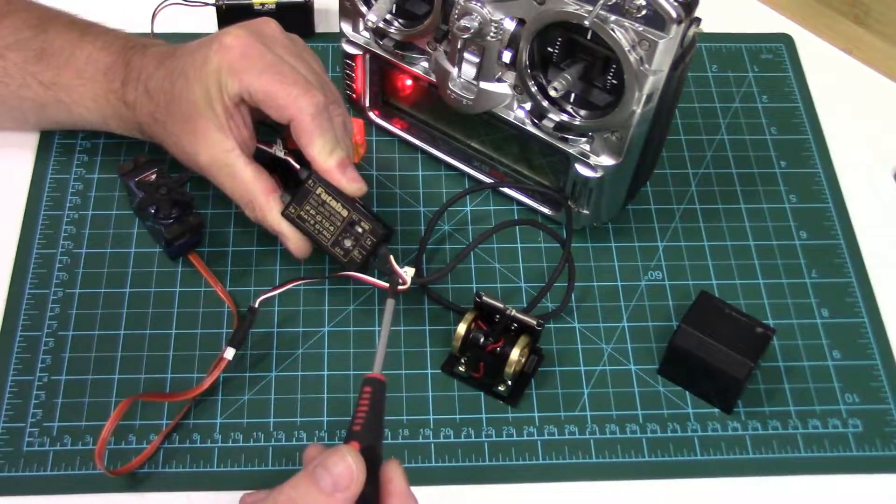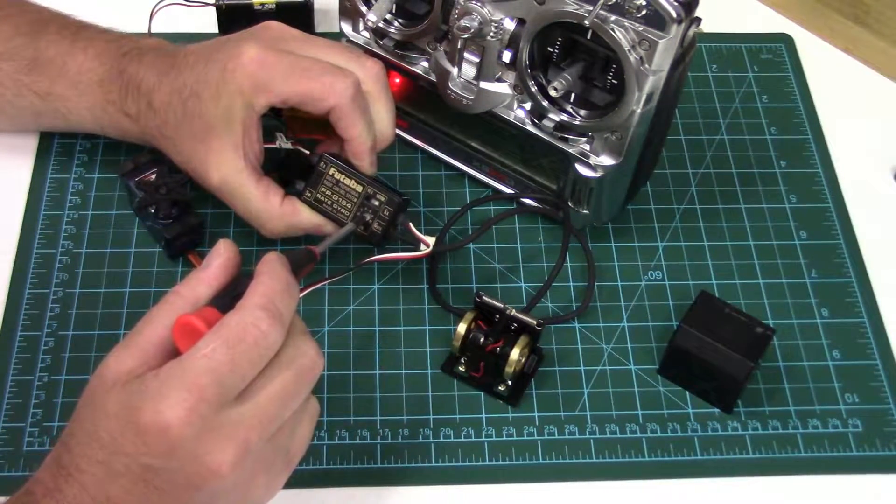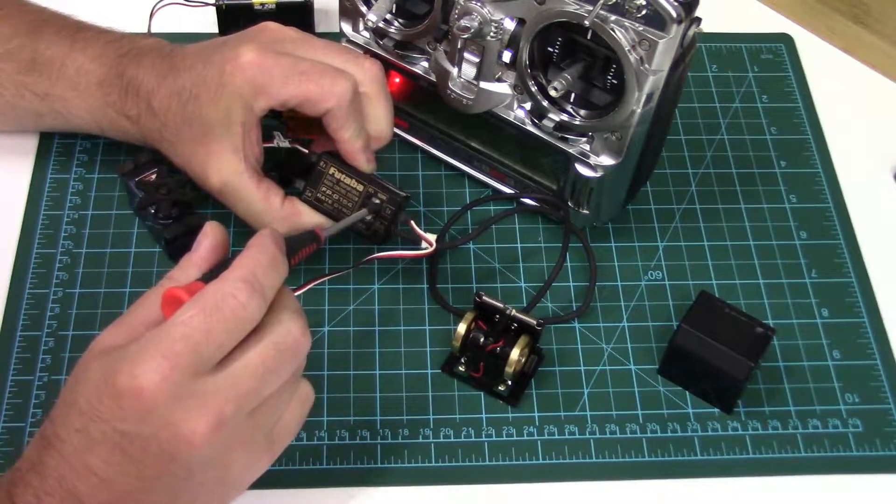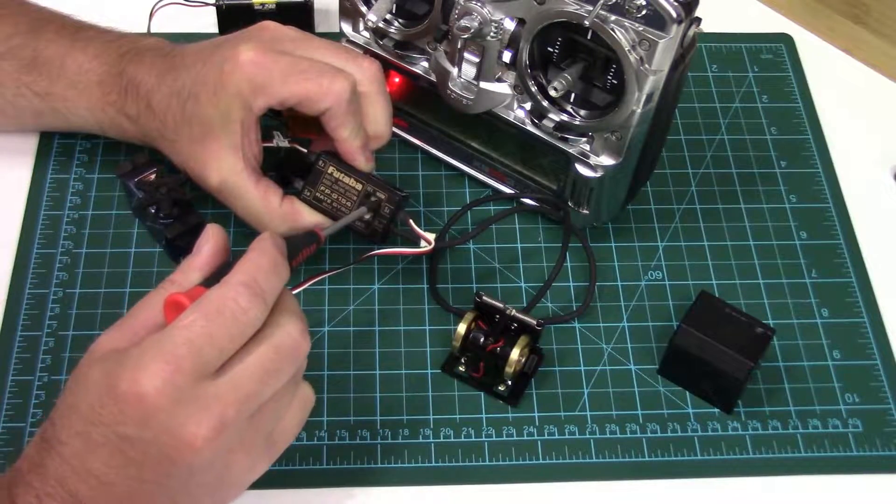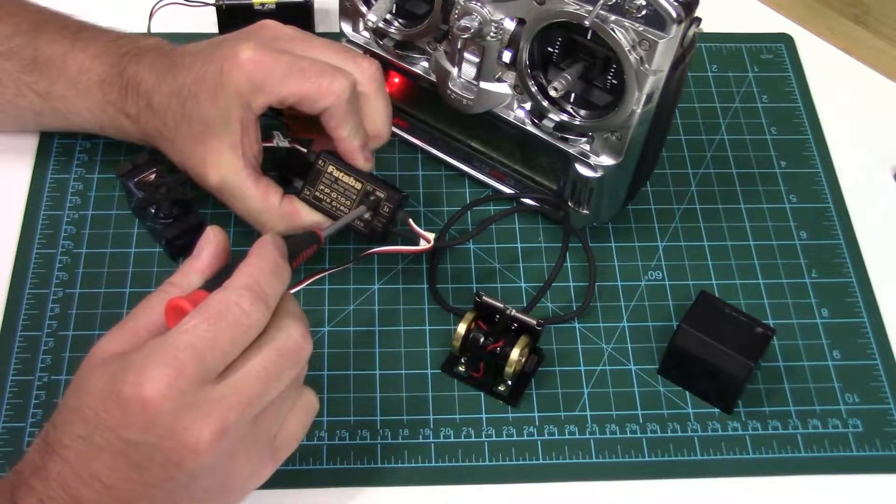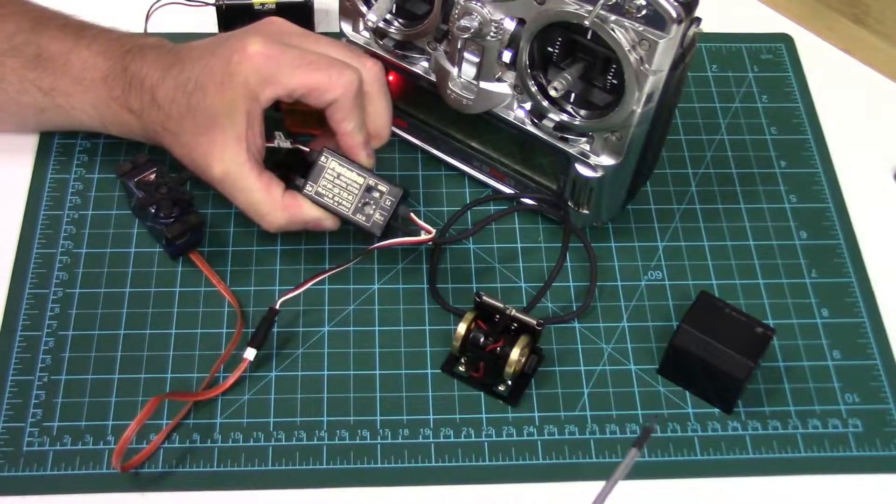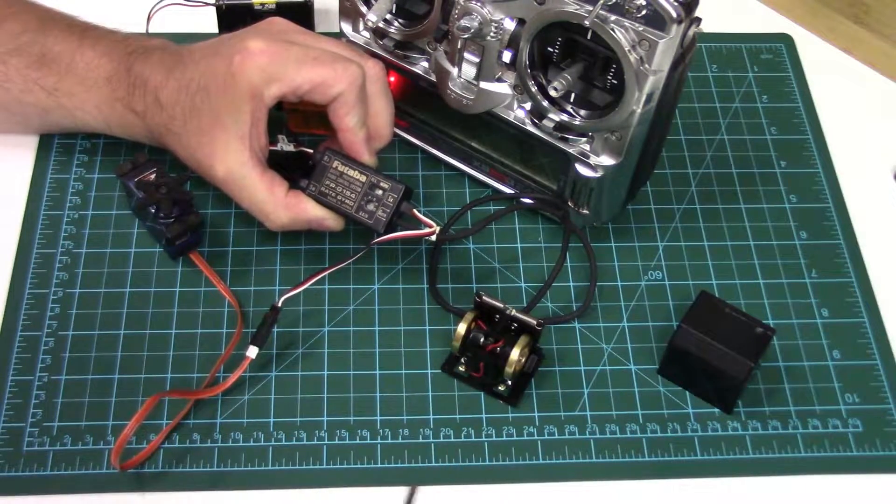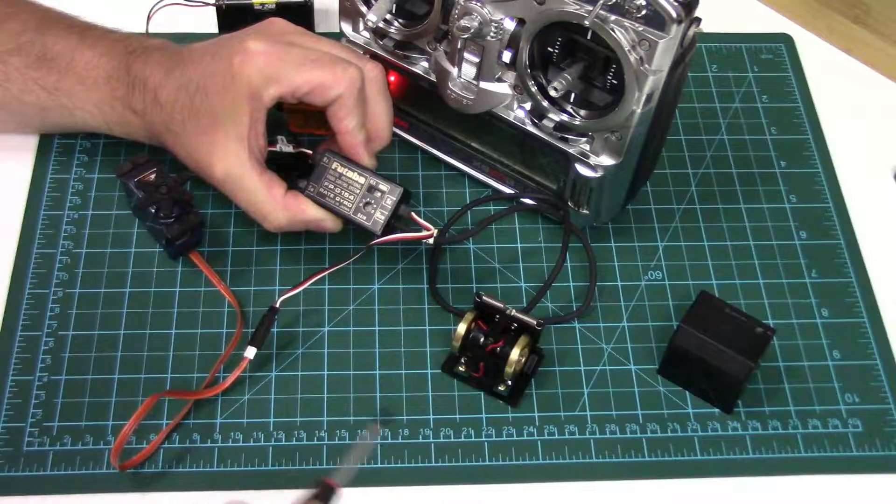There's a potentiometer to set the gain and then a directional switch to change which direction the gyro corrects in. So unlike today's modern gyros that have programming in them where you select all that either through a menu or through LED flash sequences.